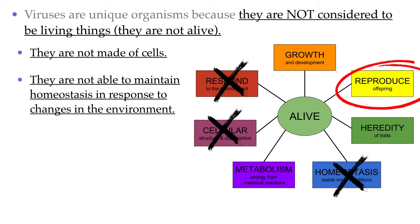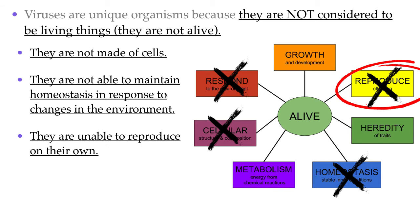Let's talk about reproduction — this is a tricky one because viruses definitely multiply. While our immune system could handle a single virus, it's the hundreds of thousands that replicate in our cells that cause disease. However, this replication cannot happen on its own. Viruses must use the host cell to create more viruses. Since viruses don't have organelles, nuclei, or ribosomes, they don't have the tools to make new viruses independently. They enter living cells and use the cell's equipment. So since they can't do it on their own, viruses cannot reproduce.